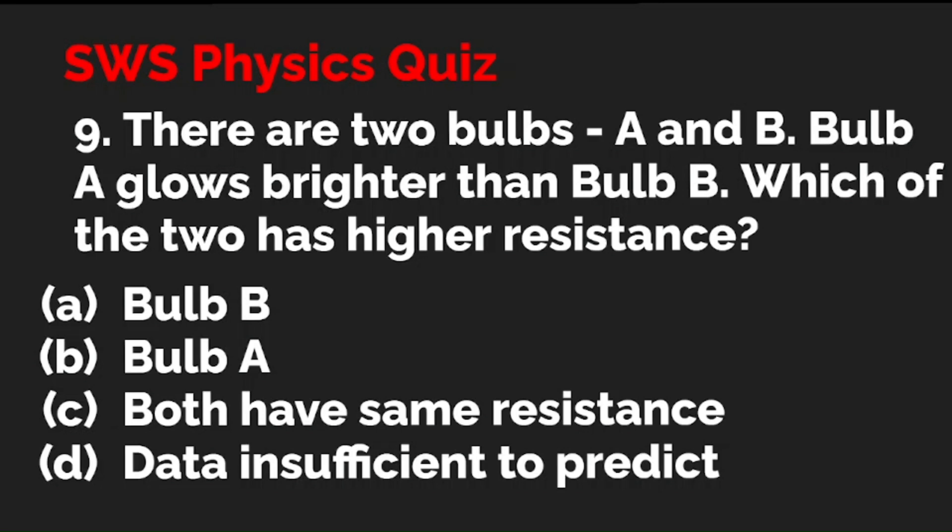Question 9: There are two bulbs, A and B. Bulb A glows brighter than bulb B. Which of the two has higher resistance? Option A: bulb B; option B: bulb A; option C: both have the same resistance; option D: data is insufficient to predict the answer. The correct answer is A — bulb B.